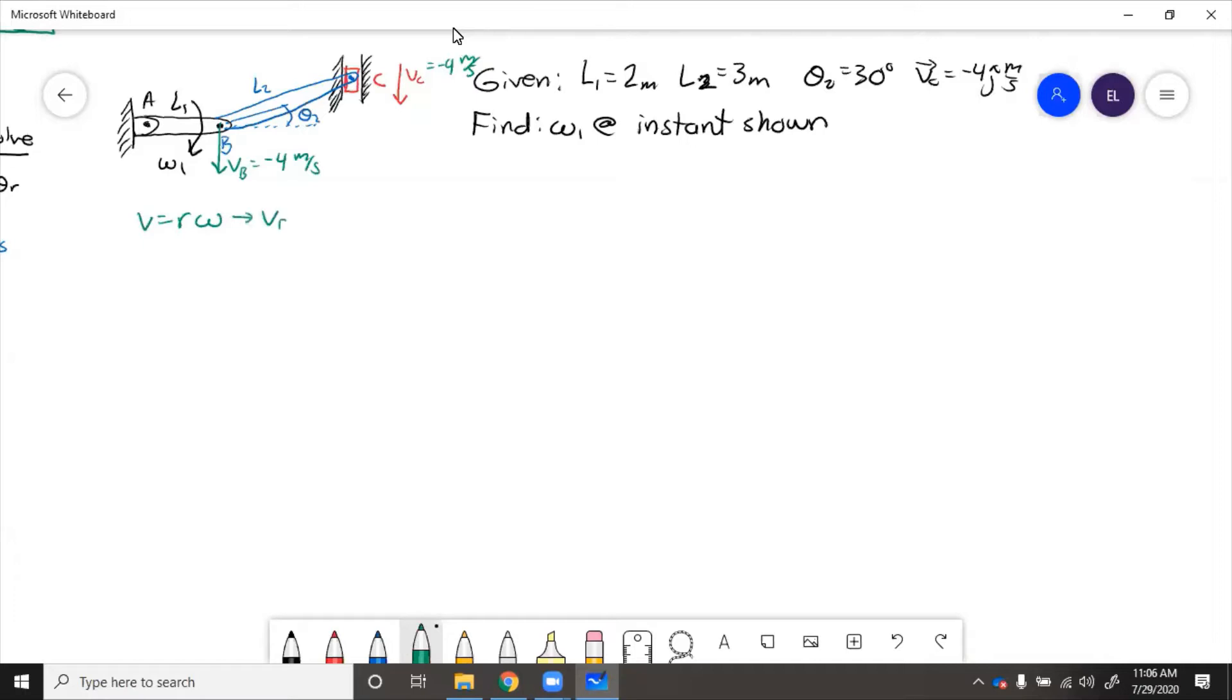So vb equals l1 omega 1, vb over l1 equals omega 1, which equals four over two equals two radians per second. So that is the shortcut.